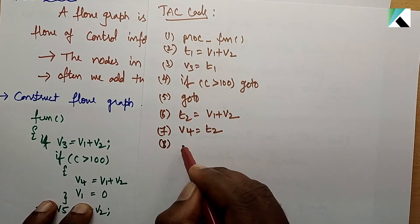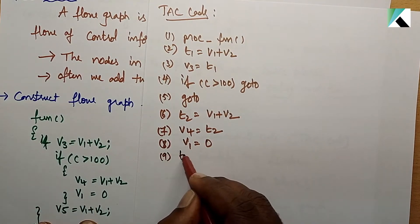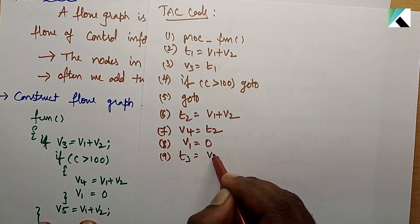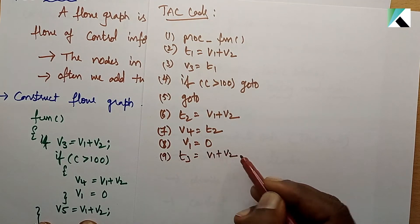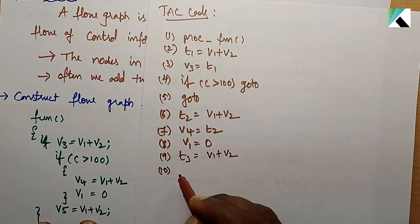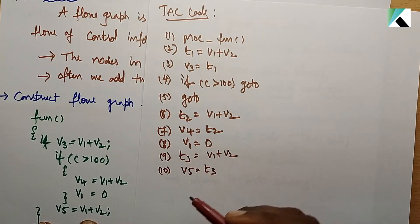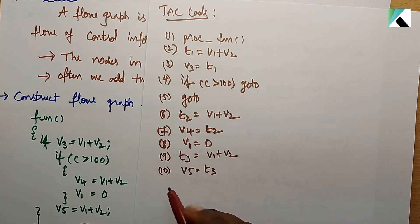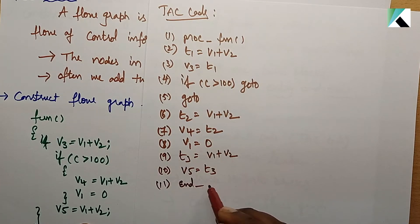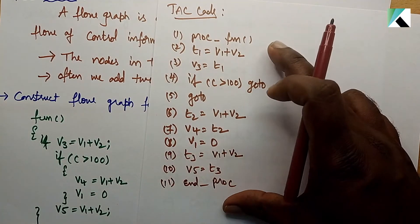Next, v1 is equal to 0. Then t3 is equal to v1 plus v2. The 10th statement: v5 is equal to t3. And the 11th statement: end procedure — procedure is equal to t3. So the code is the TAC code.